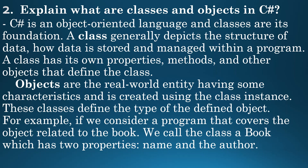Second question: explain what are classes and objects in C-Sharp? C-Sharp is an object-oriented language and classes are its foundation. A class generally depicts the structure of data — how data is stored and managed within a program. A class has its own properties, methods, and other objects that define the class.